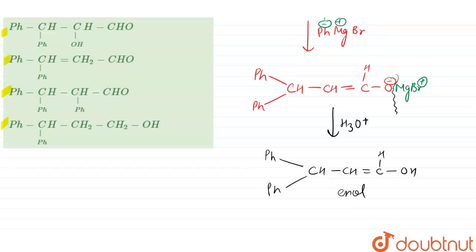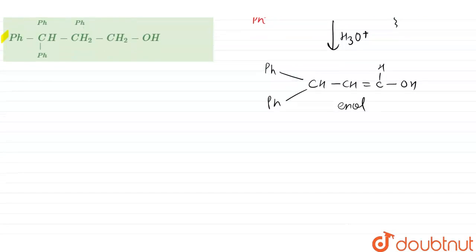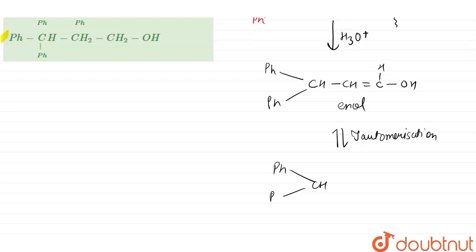As we can see, this product is in enol form. Tautomerization will take place, converting it to Ph-CH(Ph)-CH₂-CHO. So it is converted into an aldehydic group via enol-to-keto tautomerization.